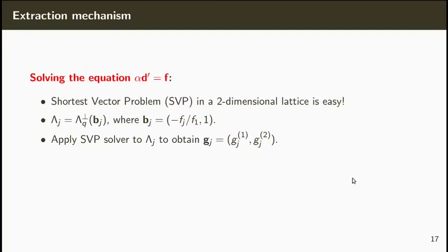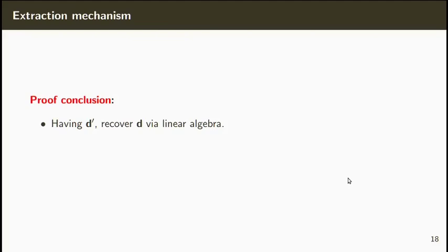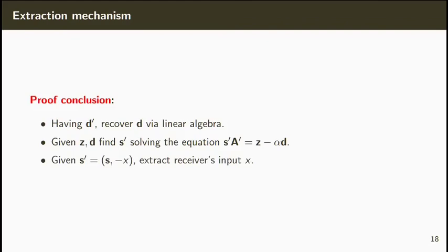We can now apply an SVP solver to lambda j and obtain the shortest vector gj. We now observe that d1 prime must be a multiple of the first coordinates of each of the vectors gj. We can now set d1 prime to be the least common multiple of these values. Now given d prime we can recover d via linear algebra and given z and d we can find the solution s prime to the equation. Finally given s prime we can extract the receiver's input x. This concludes the proof against a malicious receiver.